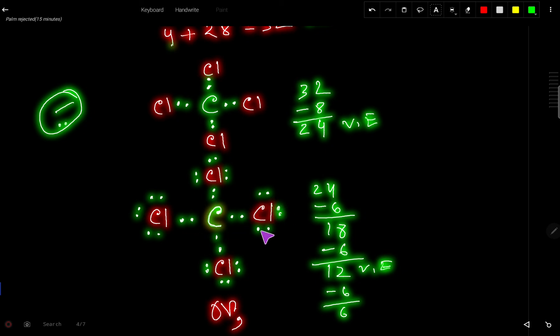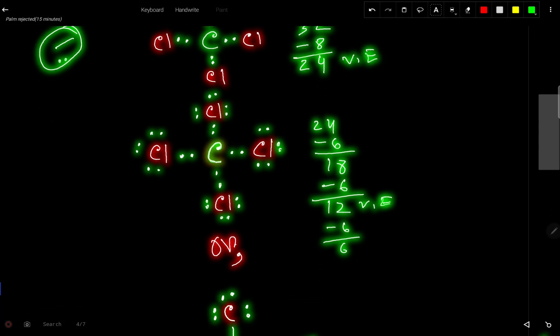And this chlorine has two, four, six, eight, and actually all the atoms have satisfied their octet. So we can say that this is the Lewis structure for CCl4. We can express this structure like this.